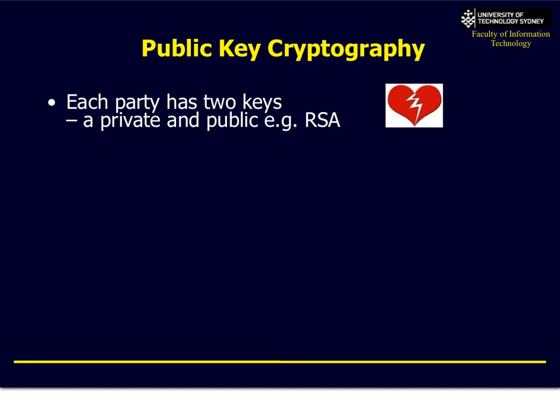One way to solve this is a technique called public key cryptography. It uses mathematics. The idea is that each party has two keys — a public key and a private key — and the two halves are linked together by an algorithm. A good example algorithm is RSA, which is based on prime numbers and factoring. Here's an example of two halves of a key.